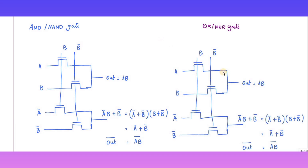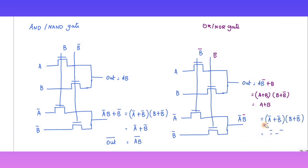Instead of B and B-bar, I'm going to substitute B-bar and B. So my answer is A + B-bar + B, which is nothing but (A + B) into (B + B-bar). B + B-bar is one, so the answer is A + B. This is my OR gate. Here I will get A-bar·B-bar + zero, because B into B-bar is zero, so this is nothing but (A + B)-bar. This is my OUT-bar — I am getting the complementary output.